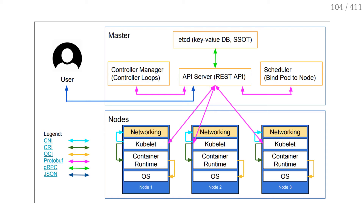Each time we write something to etcd, we need to write it to everyone. So if I just have five nodes, when I write something I just need to write it to five nodes and I'm good. If I have 100 or 1,000 nodes, now I need to write to 100 or 1,000 machines, and that's when it gets slower and slower. For etcd, good news — it manages high availability on its own, so it's not going to be too hard to run it in a highly available way.